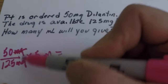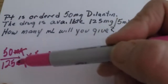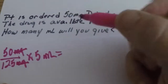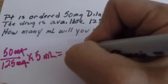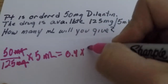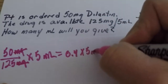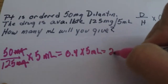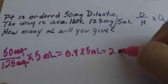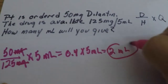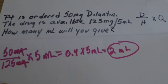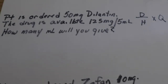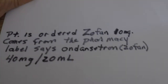Cancel out milligrams. 50 divided by 125 is 0.4, times 5 ml, and that gives us 2 ml. So we're going to be giving this patient 2 ml of Dilantin, or the generic name would be Phenytoin. Let's do one more.